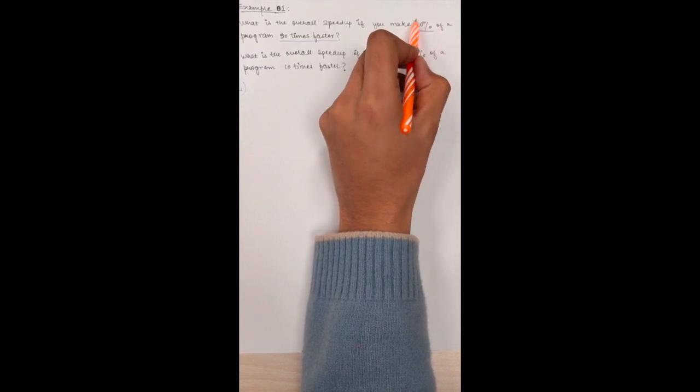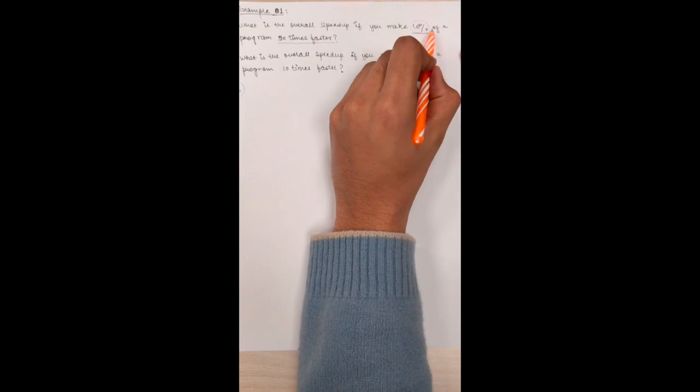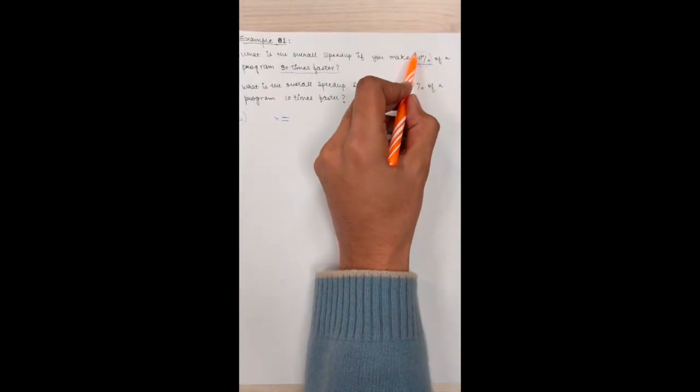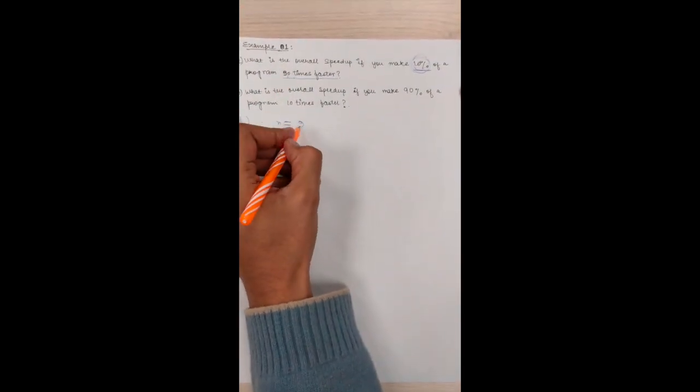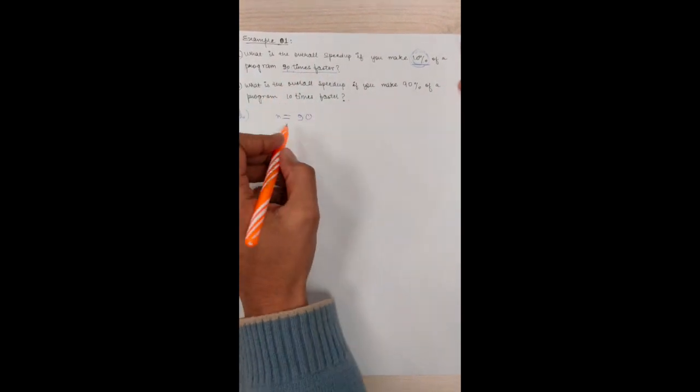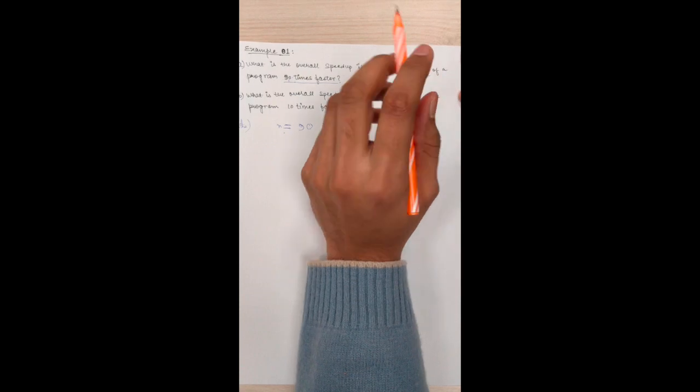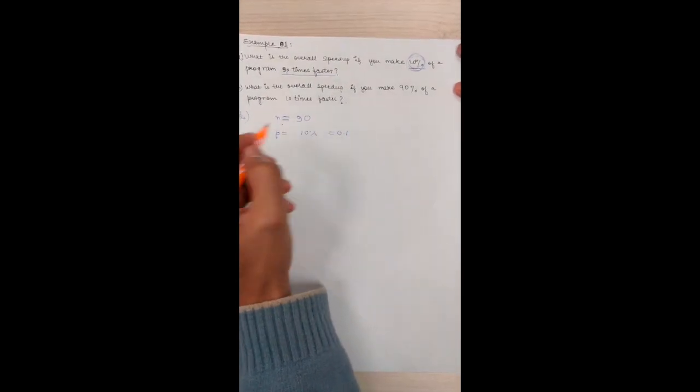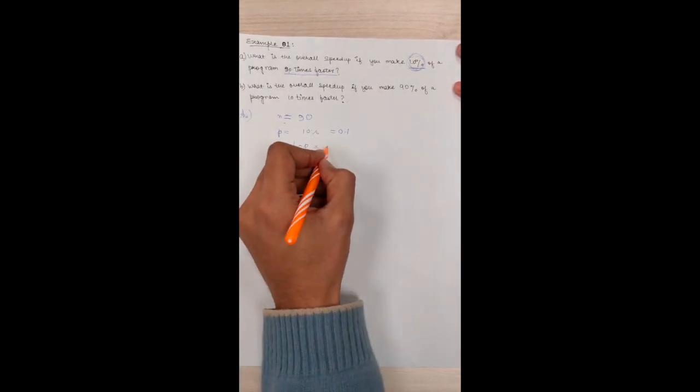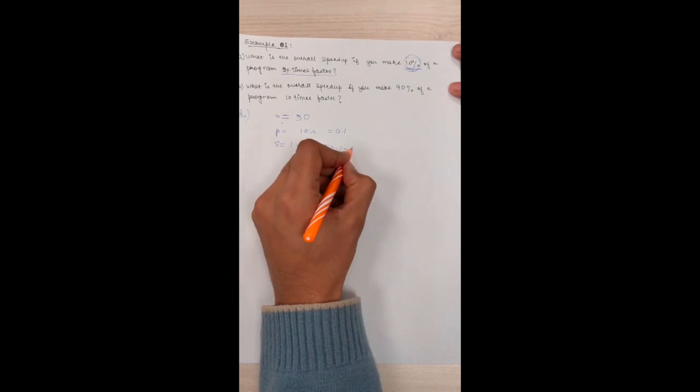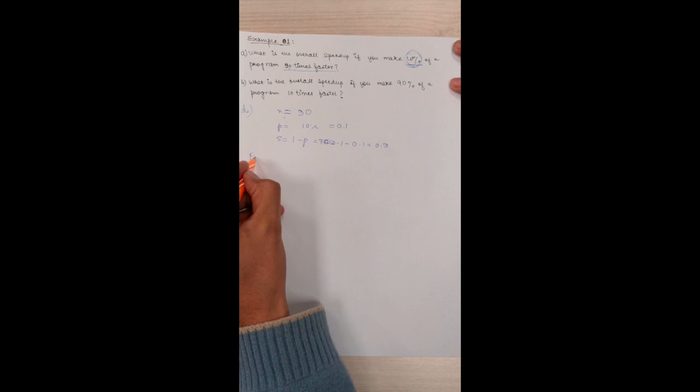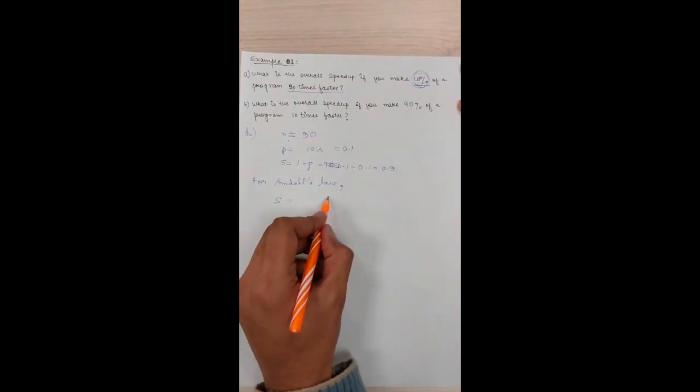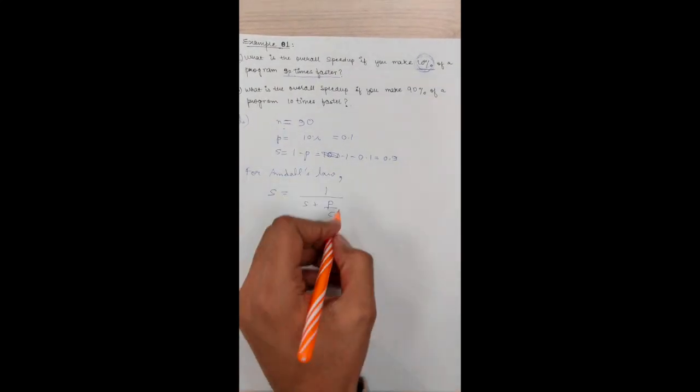The rest 90% of the program we can't change anything on it. And we have to make the 10% of the program 90 times faster. This makes me conclude that we have to increase the number of cores for the 10% of the program. And number of cores should be 90 because we want to make the program 90 times faster. And we also know that we can only change a thing which is in parallel to make it faster. Here parallel will be 10%, which is 0.1. Hence, serial is always 1 minus parallel, which is 0.9. Hence, for Amdahl's law, we get to a conclusion. Speed up equals 1 upon (S + P/C). C here is indeed cores.